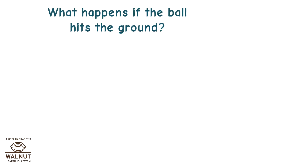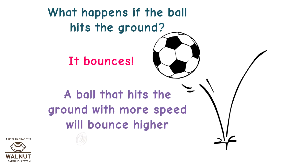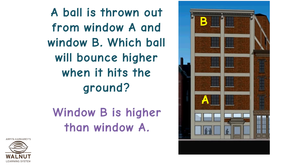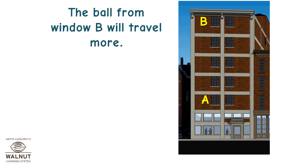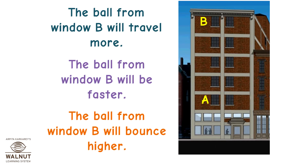What happens if the ball hits the ground? It bounces. A ball that hits the ground with more speed will bounce higher. A ball is thrown out from window A and window B — which ball will bounce higher when it hits the ground? Window B is higher than window A. The ball from window B will travel more, will be faster, and will bounce higher.